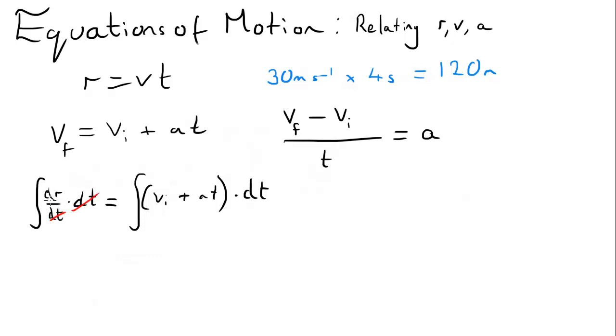So now I'm just integrating with respect to dr. So this just becomes r. Very simple. Now, on this side, when I integrate with respect to dt, this becomes Vi t.